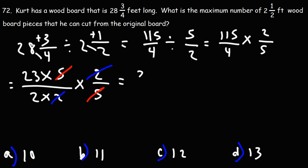So we're left with 23 divided by 2. 23 can be broken down to 22 and 1. 22 divided by 2 is 11, and then we have 11 plus 1 half. So we get 11 and 1 half.